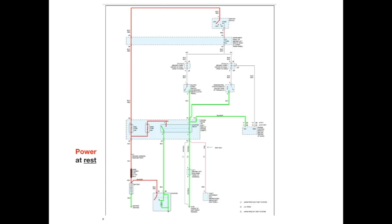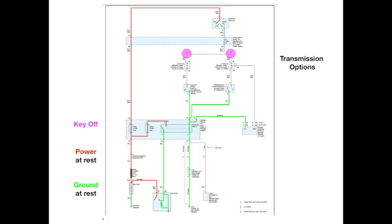Now let's look at the power at rest. Power travels the same way — as long as there's continuity it travels, but it stops at an open. This is all with your key off — power at rest and ground at rest when your key is off. We have transmission options in this diagram, both for a manual on the left and an automatic on the right, so we're going to eliminate the manual because we have an automatic transmission.